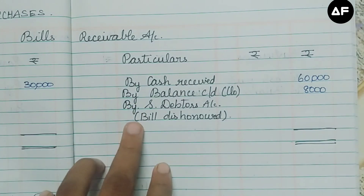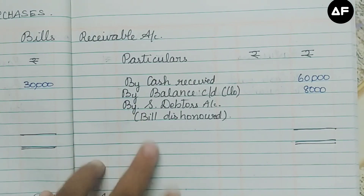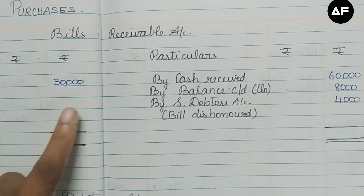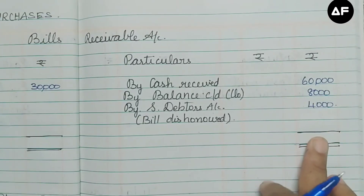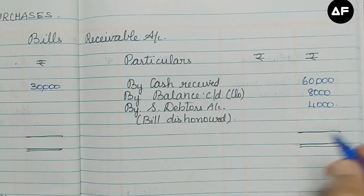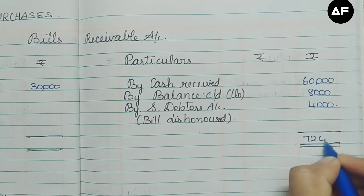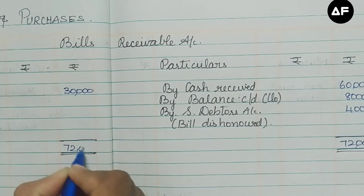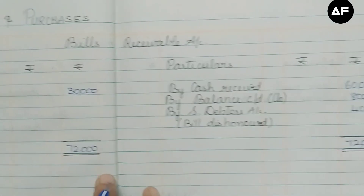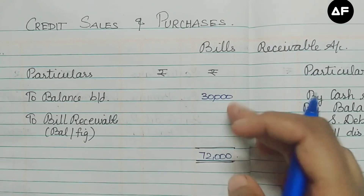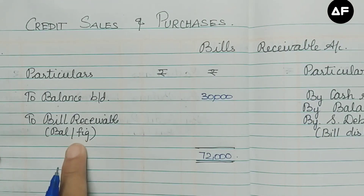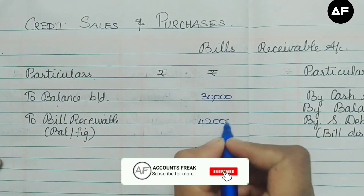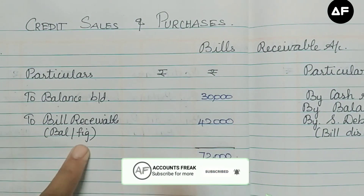The bills receivable dishonored is 4,000. Adding up the credit side: 60,000 + 8,000 + 4,000 gives a total of 72,000. I write 72,000 as the grand total on both sides. Subtracting 30,000 from 72,000 gives a balancing figure of 42,000. This bills receivable balancing figure on the debit side must be transferred to the credit side of the sundry debtors account.